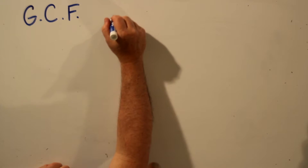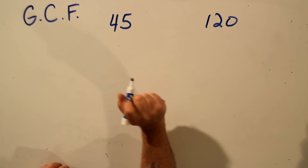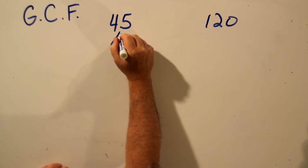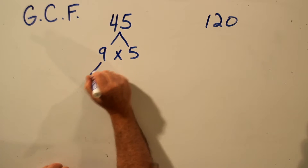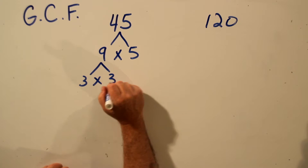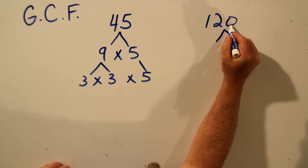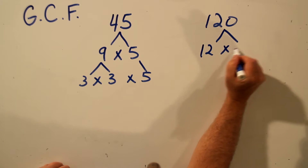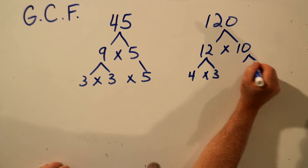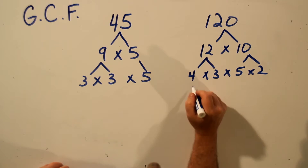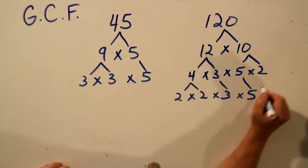Let's find the greatest common factor for 45 and 120. We'll start by creating a prime factor tree for each number. 45 can be factored as 9 times 5. 9 is 3 times 3, and 5 is prime. For 120, since it ends in 0, we know 10 goes into it — so 12 times 10 is a good place to start. 12 is 4 times 3, 10 is 5 times 2, and 4 is 2 times 2.